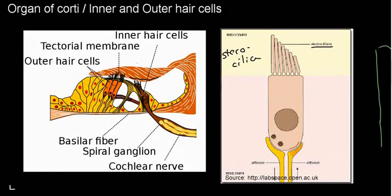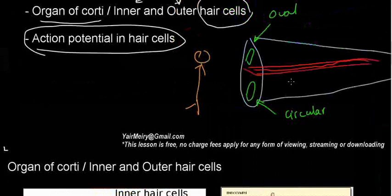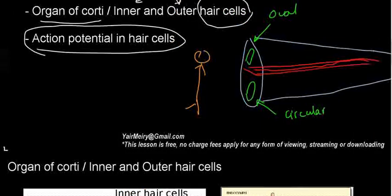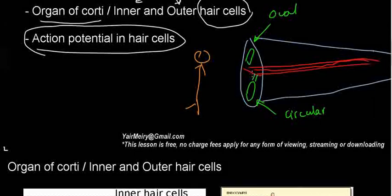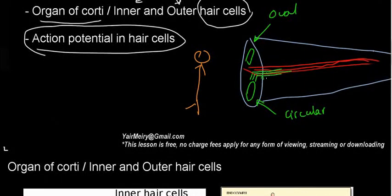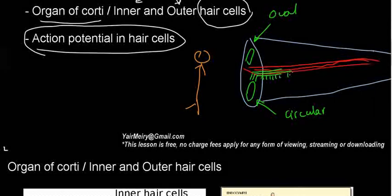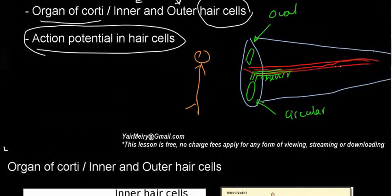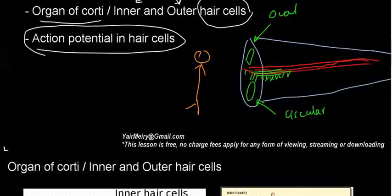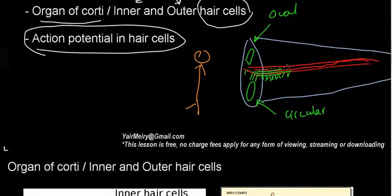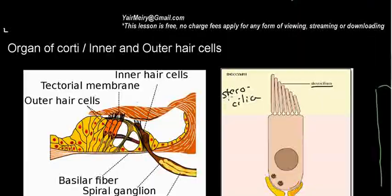If you're wondering what I mean by three rows and one row: imagine standing over here and looking inside — you'd see three rows of outer hair cells going all the way across. And the inner hair cell is maybe this little guy here, with a row of inner hair cells alongside them.